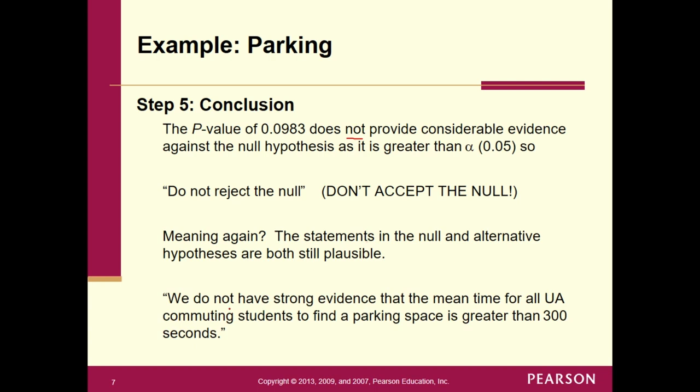So what's going to be our final conclusion right now? We're going to say we do not have strong evidence. We do not have sufficient evidence. We do not have statistically significant evidence. If you want to go ahead and state your level of alpha at the 5% significance level. The mean time for all UA commuting students to find a parking space. So that's mu is greater than 300 seconds. So we do not have strong evidence of that. Even though the X bar was slightly above 300. We can't say for certain. That mu is going to be for the entire population. Remember, mu is for the entire population. And X bar is just for that 100 commuters. It is a possibility that mu still could be under 300 at this point. And so, we're getting close to maybe rejecting the null, but not quite.